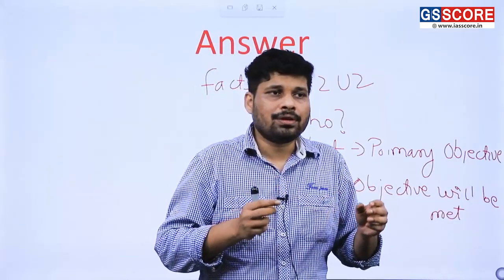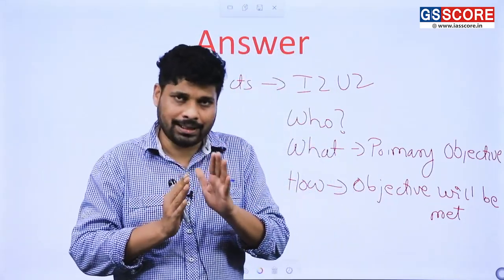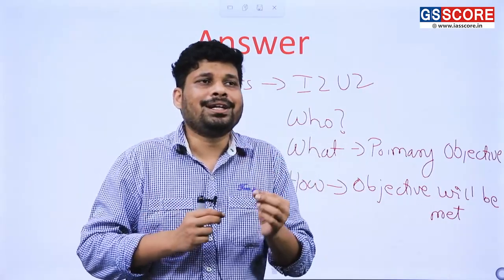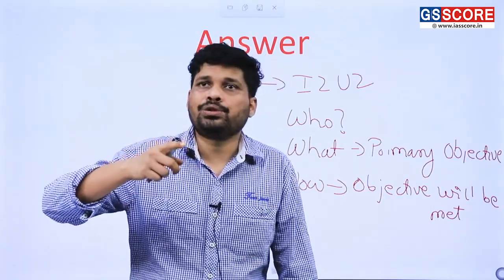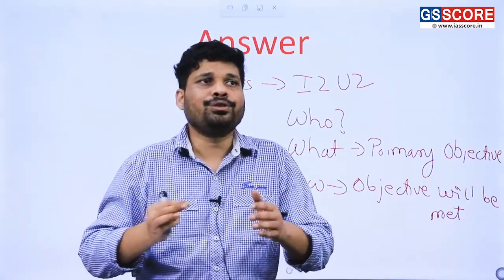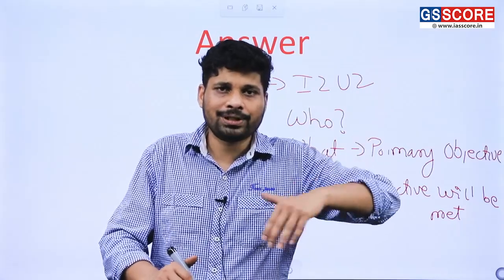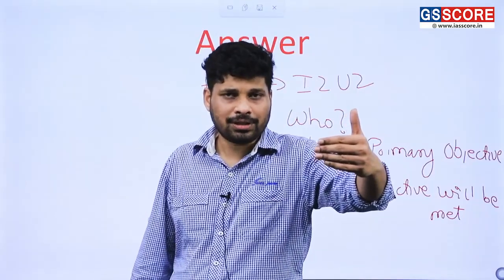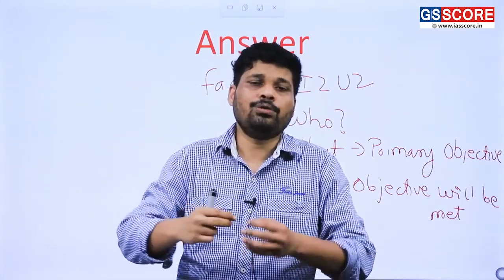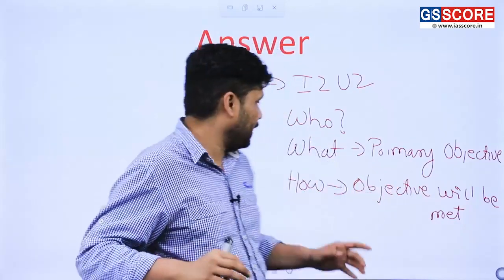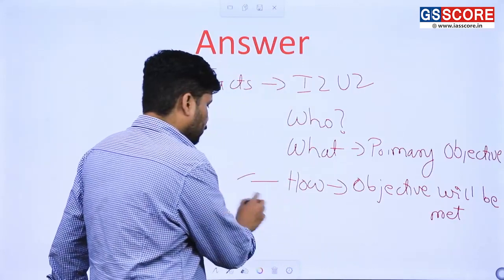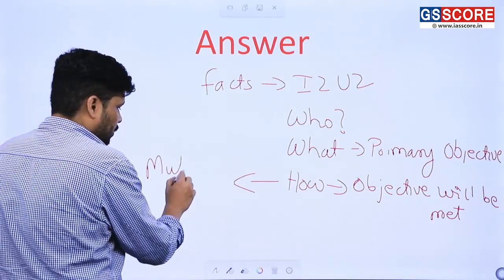You have to craft your writing so that it does not look like a conspiracy theory. State that containing China is also an objective, but use sophisticated language. This applies to answers on all groupings, because most groupings in international relations have an objective which is not fully stated upfront. You have to find a way to mention that objective without making your answer look like a conspiracy theory.